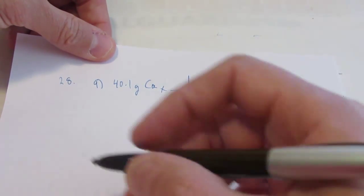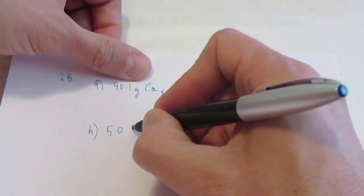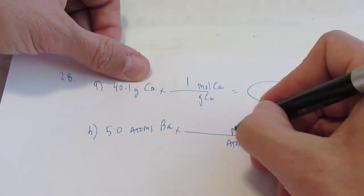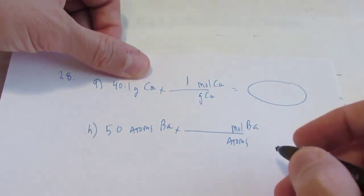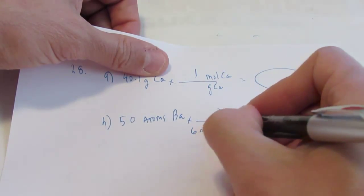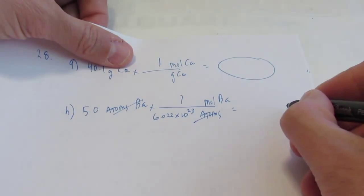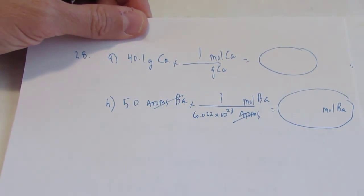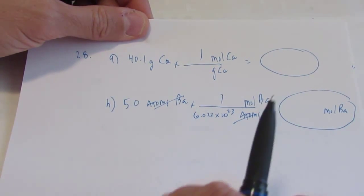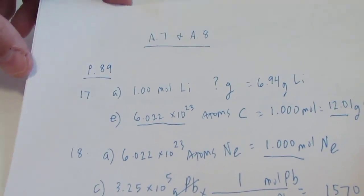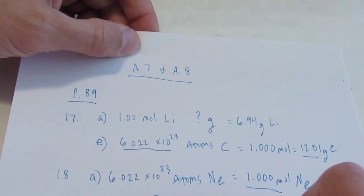Let's hop over to letter H: we have 50 atoms of barium. We go from atoms to moles of barium — put a 1 by mole, and since an atom is a fundamental particle, that's Avogadro's number. You'll end up with moles of barium, and I'll let you finish that up on your own. After this video you should have a pretty good handle on converting from grams to moles, moles to grams, or moles to atoms of any element on the periodic table. If you need more help, come see me or watch this video again. Thanks for your time — hope this helped. Bye-bye.